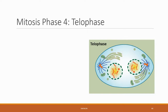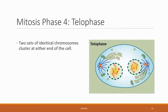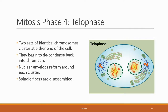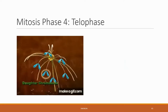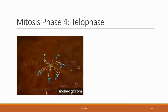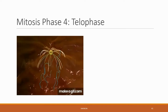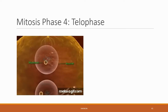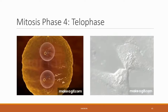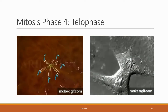Mitosis phase four, telophase: these two regions of the cell begin to revert back to a chromatin form. A nuclear envelope takes shape around them. The spindle fibers are dissociated, and now the cell has two identical nuclei, as can be seen here and in the microscopy image.